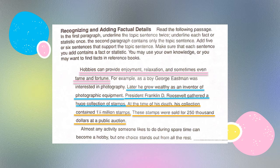Now, your next part of the activity: "Almost any activity someone likes to do during spare time can become a hobby. But one choice stands out from all the rest." That's the topic sentence, the beginning of your paragraph. Now you need to add facts and statistics of your own. Add five or six sentences that support that main idea, and they must include facts and statistics. You can use them from your own knowledge — remember, it has to be something that can be proven — or you can use a reference book, or even look it up on Google. But it has to make sense and be part of the topic.